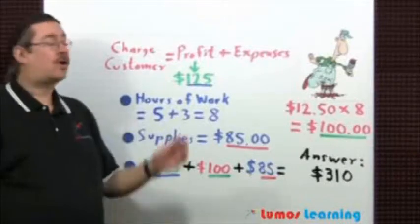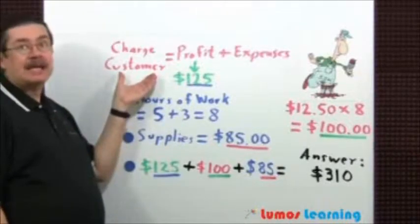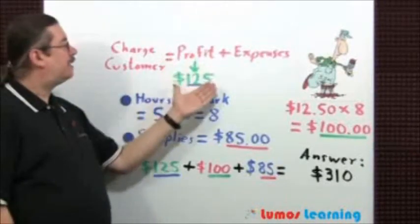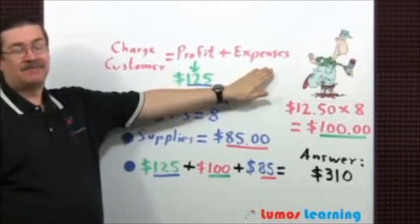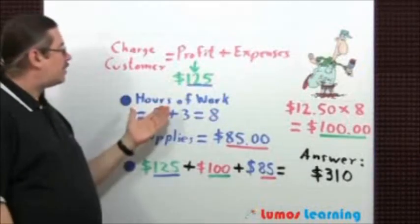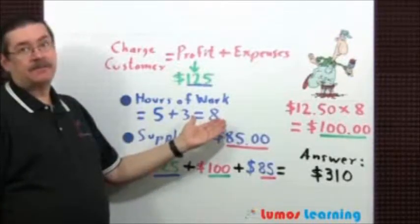The amount Gary would need to charge the customer would be equal to the anticipated profit of $125 plus all of his expenses. The hours of work is 5 plus 3 equals 8 hours.